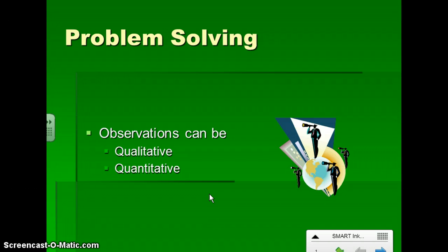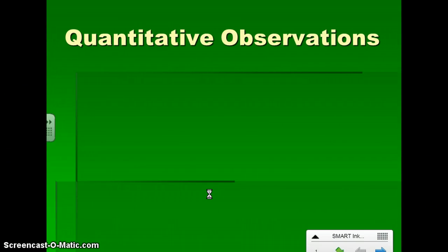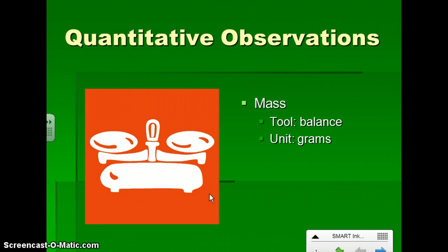When we are making observations, some of them will be qualitative and some of them will be quantitative. Qualitative has to do with the quality of something, while quantitative has to do with numbers. So, some quantitative observations. We are going to be recording mass. We can use a balance for that, and the unit that we'll use is grams.